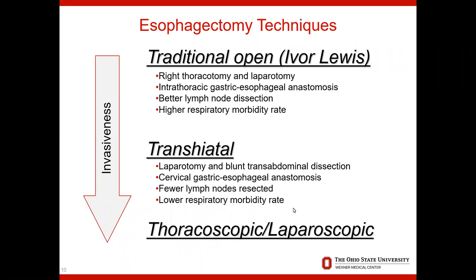This diagram demonstrates the types of esophagectomy techniques currently available. The traditional open operation involving a thoracic incision and an abdominal incision is called the Ivor Lewis esophagectomy. This operation involves reconstruction of the stomach and esophagus within the chest cavity and allows removal of a large number of lymph nodes. However, due to the open thoracotomy incision, there is a higher rate of respiratory complications associated with this approach.